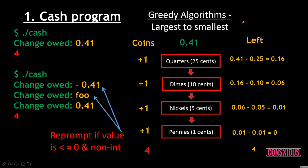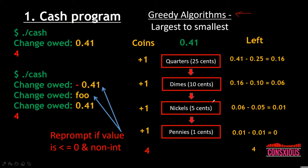We're going to use an algorithm called the greedy algorithm, which means it will go from the largest to the smallest coin value. In this program we have four types of coins: quarters, dimes, nickels, and pennies — that is, twenty-five cents, ten cents, five cents, and one cent. For example, if the user keys in a value of 0.14 dollars, we need something to track how many coins the user will receive.